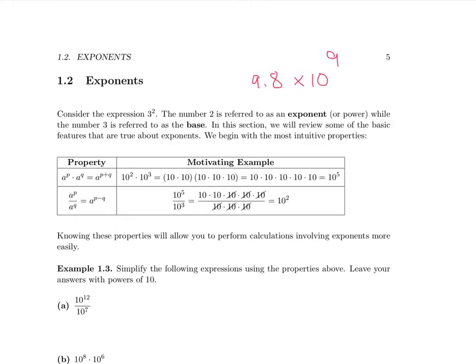Consider the expression 3 squared. The number 2 is referred to as an exponent, or a power, while the number 3 is referred to as the base. In this section, we're going to review some basic features that are true about exponents. In the table below are listed two properties of exponents — these are the two most intuitive properties that exist.